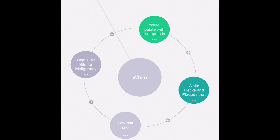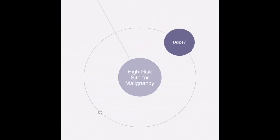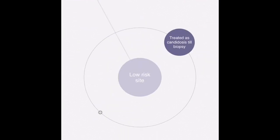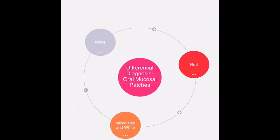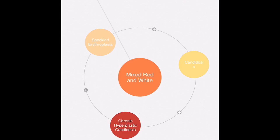Now if these white lesions appear in a high risk site and we are not sure what kind of white lesion it is, just like in posterior lateral border of the tongue or floor of the mouth, then immediately biopsy is recommended. Similarly, if these lesions are in low risk sites, they are treated as candidiasis till biopsy is completed.